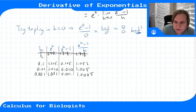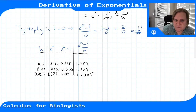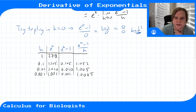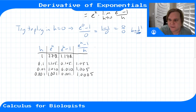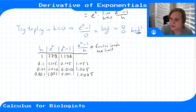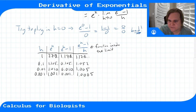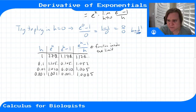Here's a table of values. For h = 1, e^h is 2.718, subtract 1 to get 1.718, divide by h to get approximately 1.718. For h = 0.1, e^h is about 1.105, subtract 1 to get 0.105, divide by h to get approximately 1.052 — already pretty close to 1.